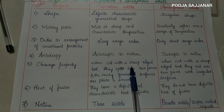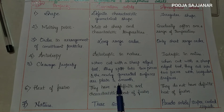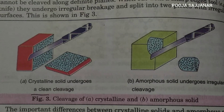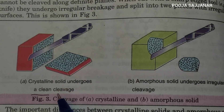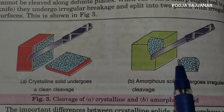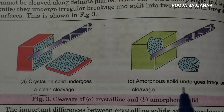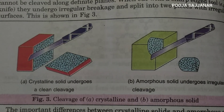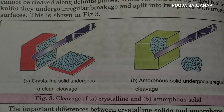Crystalline solids, when cut with a sharp-edged tool, split into two pieces and the newly generated surfaces are plain and smooth. But amorphous solids, when cut with a sharp-edged tool, cut into two pieces with irregular surfaces. For example, if we cut a crystalline solid using a knife, it gives a clean cleavage — the surface of the cut piece will be plain and smooth. If we cut an amorphous solid, it gives an irregular cleavage — the surface of the cut piece will not be regular or plain. Therefore, amorphous solids give irregular cleavages.